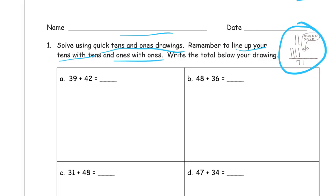So 39 plus 42. I'm going to need three tens and nine ones. So that's one, two, three tens. And my ones I'm going to put a little bit over here to the right: one, two, three, four, five, six, seven, eight, nine.